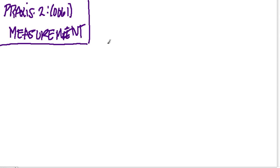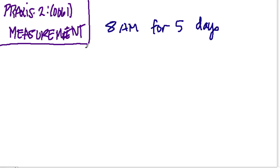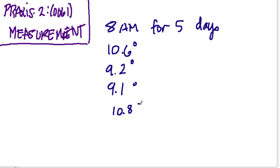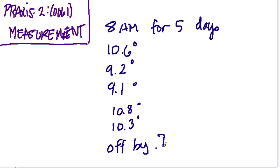The problem says: using a digital thermometer every morning at 8 a.m. for 5 days, a scientist measures the temperature in degrees Celsius of a lake. The temperature readings are 10.6 degrees, 9.2 degrees, 9.1 degrees, and 10.3 degrees. Before the temperature measurements are numerically summarized, the scientist discovers that the digital thermometer is off by 0.7 degrees. Which of the following is a true statement that can be made about the scientist's data?